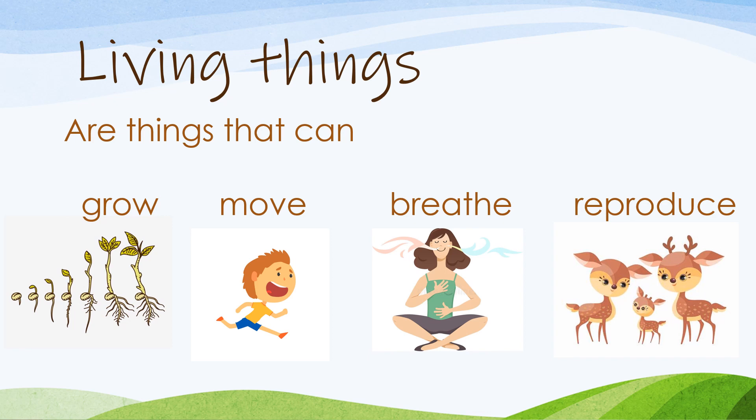Living things can reproduce. For example, a mummy and a daddy deer can have a baby deer.